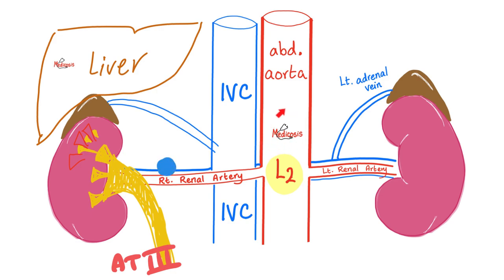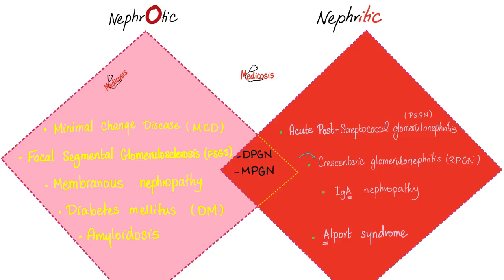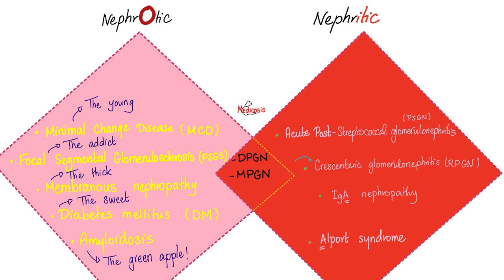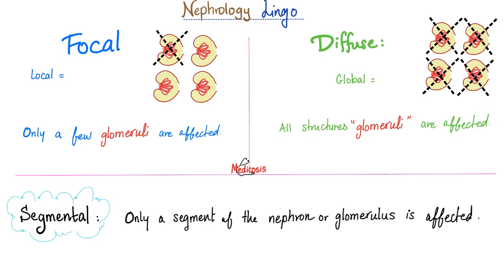Medicine makes so much sense once you understand it. What are the histopathological subtypes of nephrotic syndrome? Minimal change disease, focal segmental glomerulosclerosis, membranous nephropathy — which is today's topic — diabetes mellitus, and amyloidosis. In other words: the young, the addict, the thick glomerular basement membrane, the sweet, the green apple.